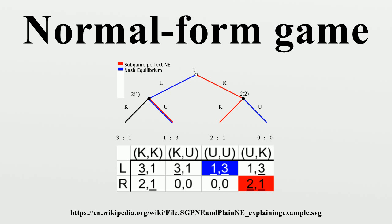An example: the matrix to the right is a normal form representation of a game in which players move simultaneously and receive the payoffs as specified for the combinations of actions played.